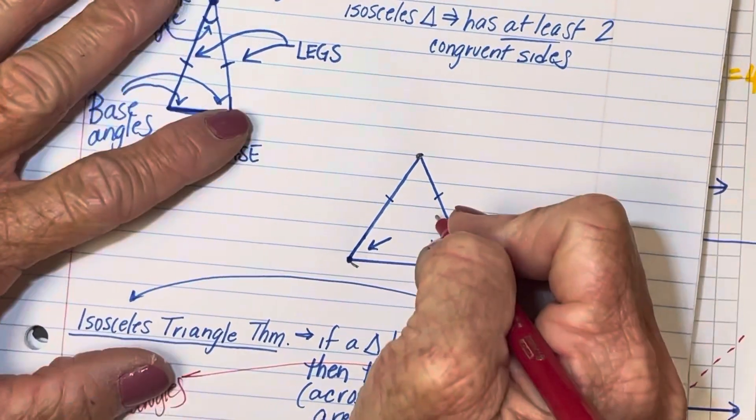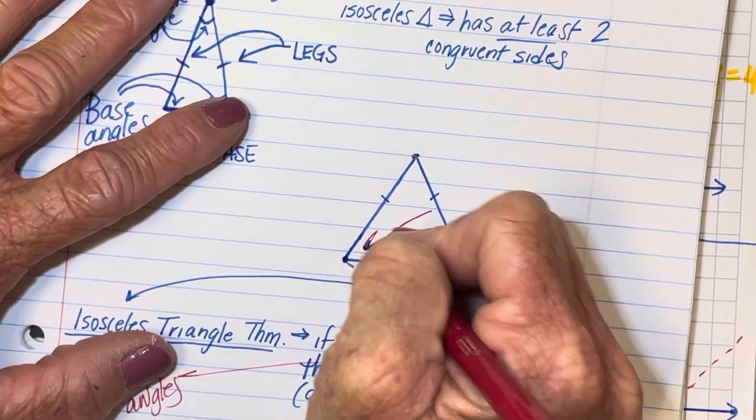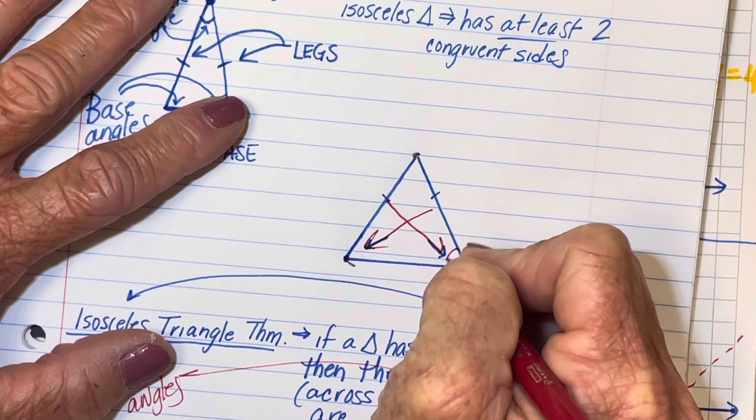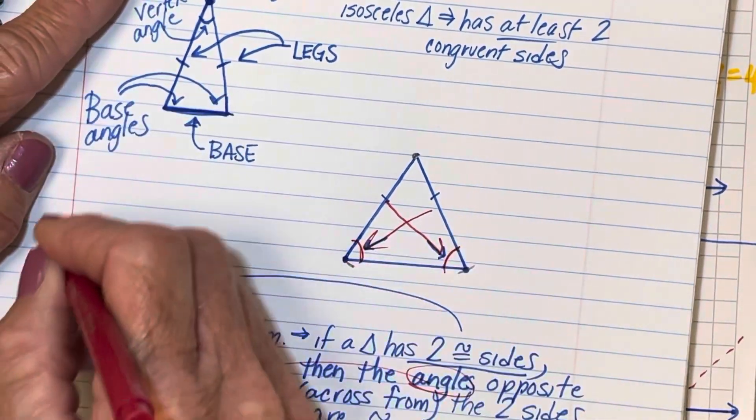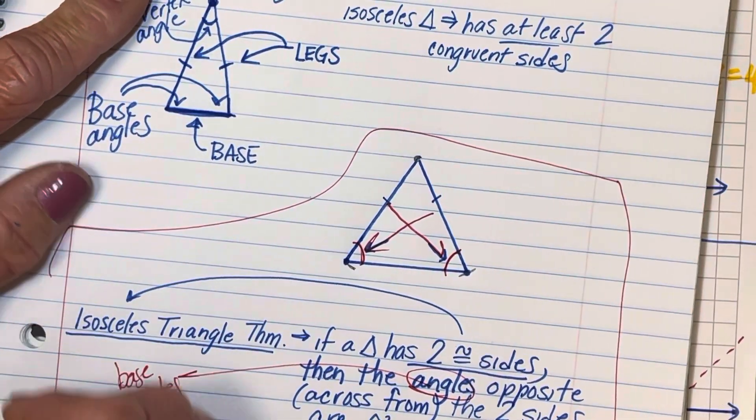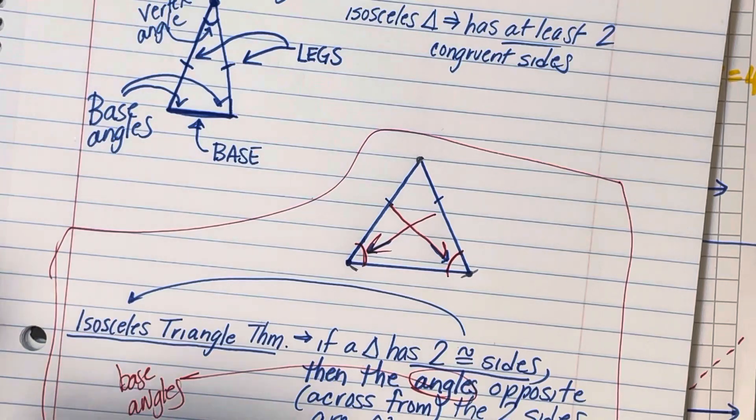Okay? So the sides are congruent. If we go across from those sides, these two angles are congruent to each other. That's what the isosceles triangle theorem says.